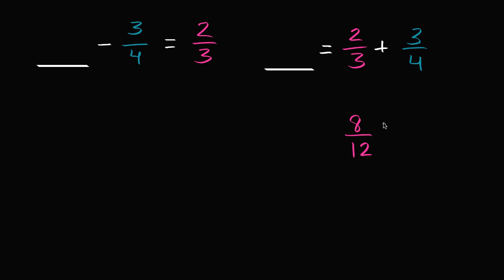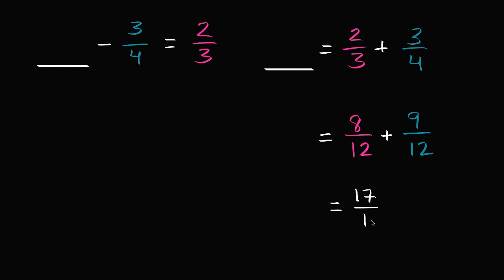So this is going to be 8/12 plus — and 3/4 is the same thing as what over 12? To go from 4 to 12, you multiply by 3, so you multiply the numerator by 3 as well. 3 times 3 is 9. So 8/12 plus 9/12 is going to be — 8 plus 9 is 17 — so 17/12.